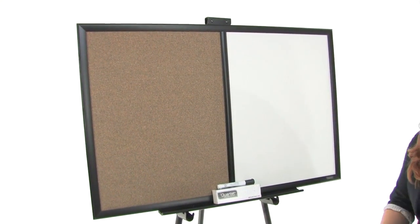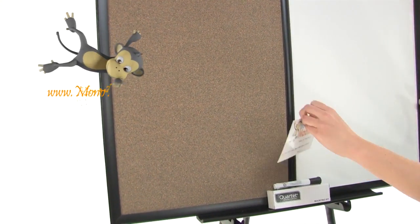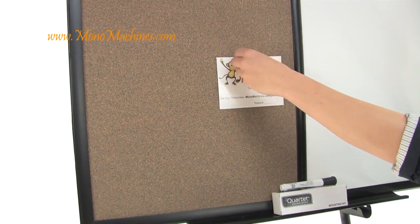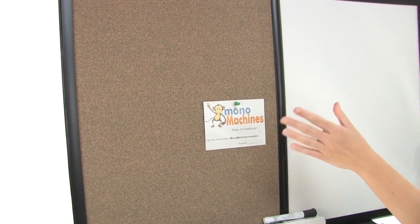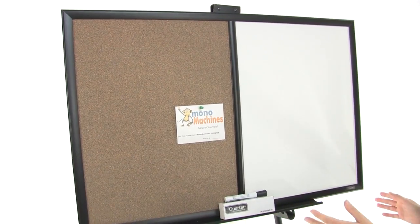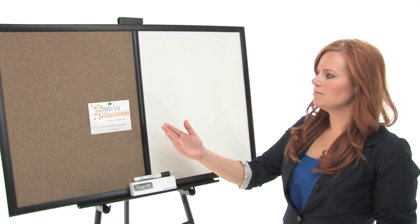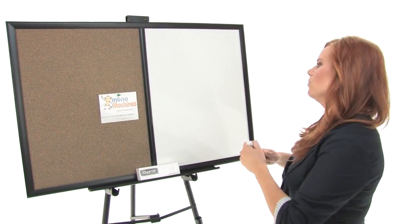It has a black frame with colored cork that surrounds a 3x2 foot board, a self healing cork surface that hides unsightly pin holes when you hang photos or messages. Now of course the unique feature about this board is it has a smooth writing surface.